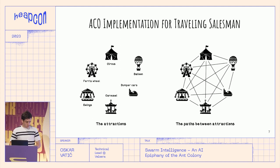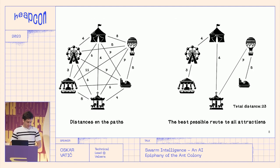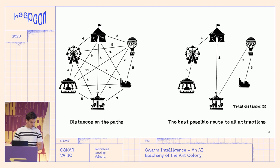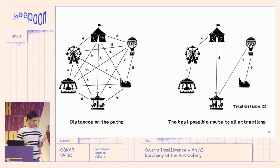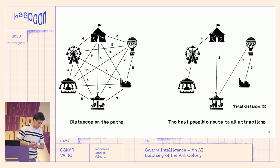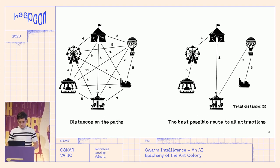Solving this graph by hand, it turns out the minimal distance is 23. But again, this is only possible because this is a very small graph — and even if the graph is small, this is not something you ever want to do by hand.